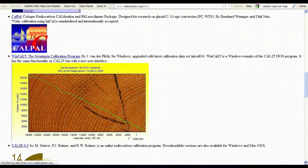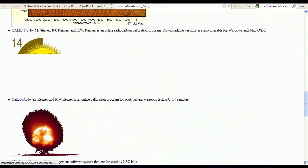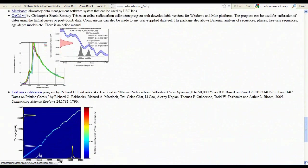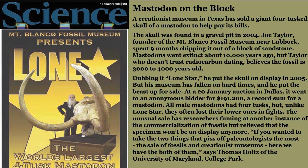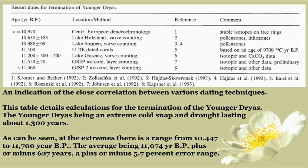A handful of creationists will continue to spit out exceptions to the rule, and those with a strong desire to believe will embrace the exceptions and delude themselves into ignoring the fact that it is the exceptions which prove the rule. Meanwhile, many thousands of real scientists will continue to produce hundreds of papers each year on tens of thousands of samples that will continually refine and improve the radiocarbon dating process. Scientists know all of this and offer dates within the limitations of what they know, and they very often have access to corroborative dating techniques from tree rings, ice cores, sedimentation, historical records, etc.